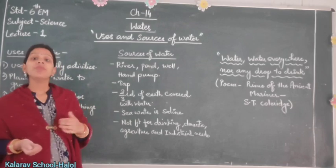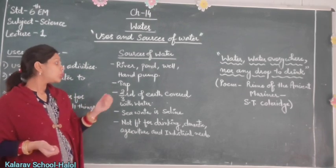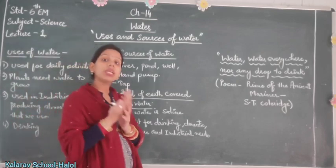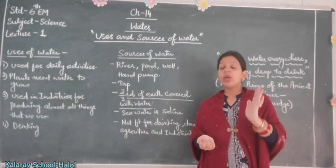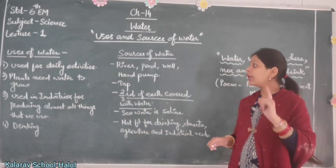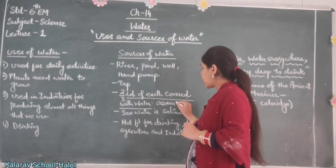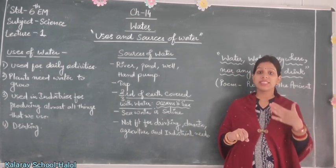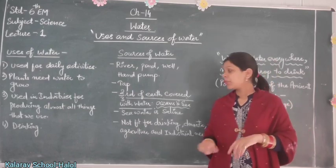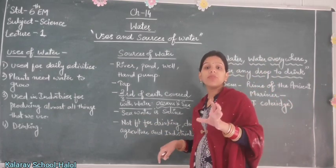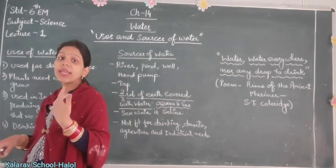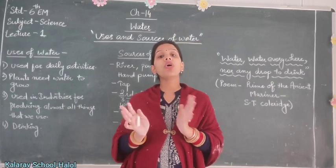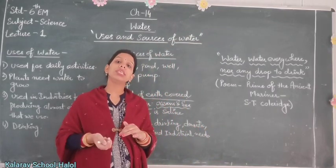We get water from seas and oceans. Two-thirds of the earth's surface is covered with water, so we can say that oceans and seas are the main sources of water — they provide the maximum amount of water. However, sea water is saline, which means it is salty in nature. Sea water contains a number of salts dissolved in it, which is why it remains salty.